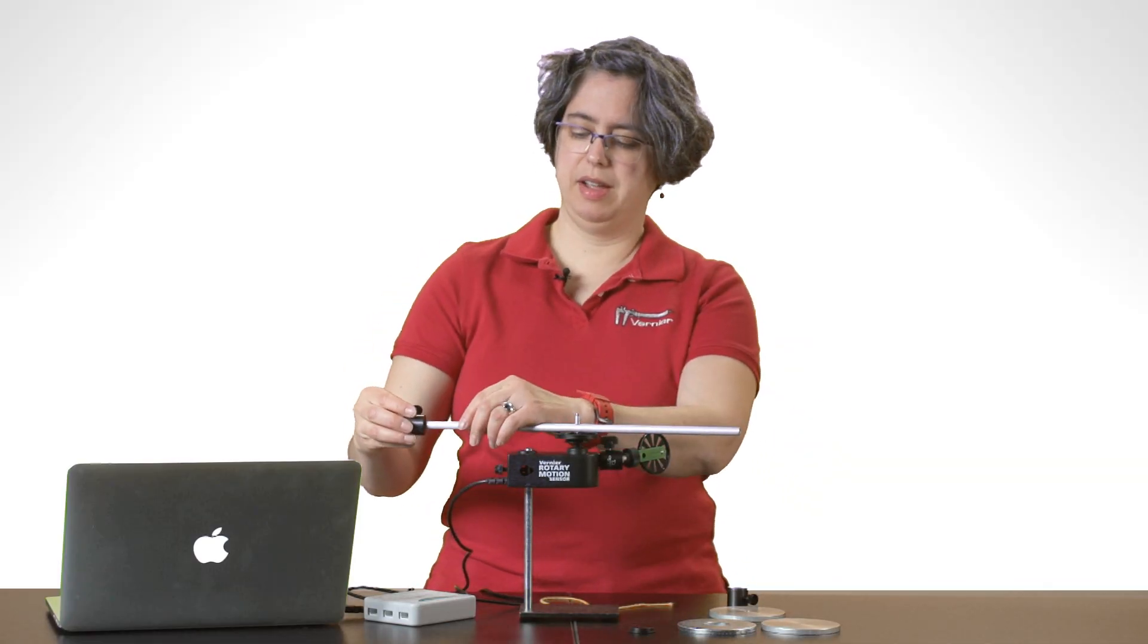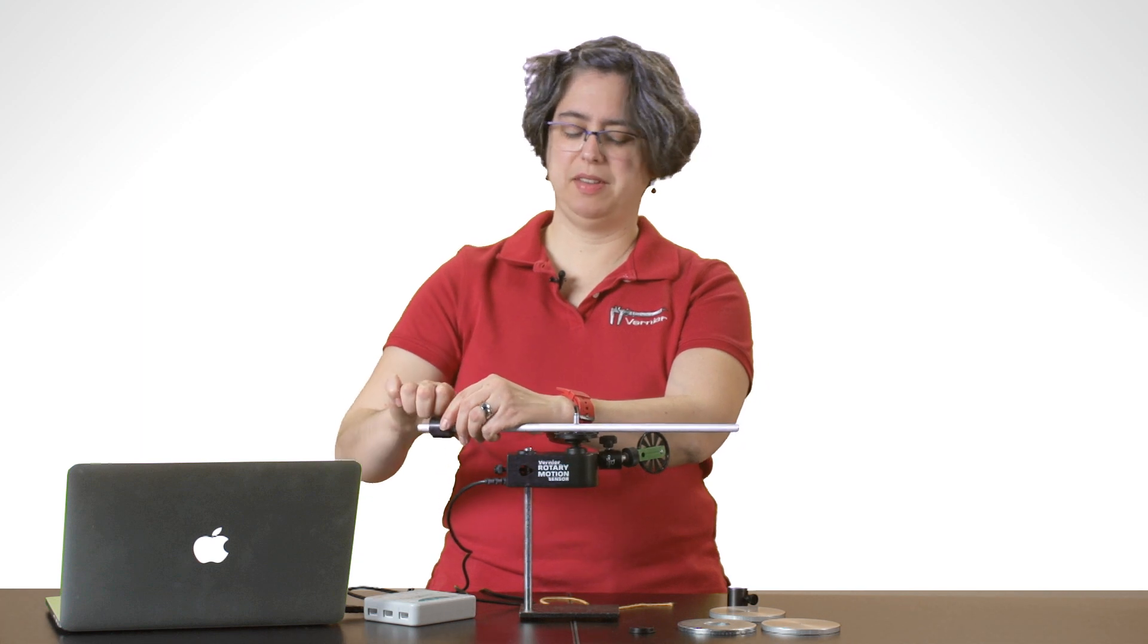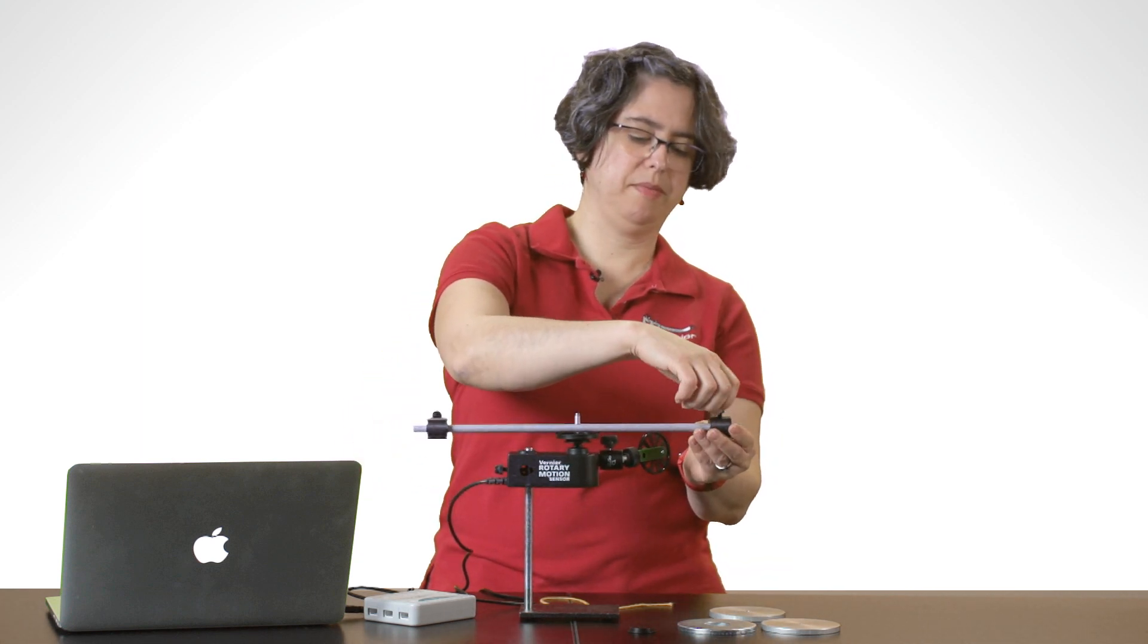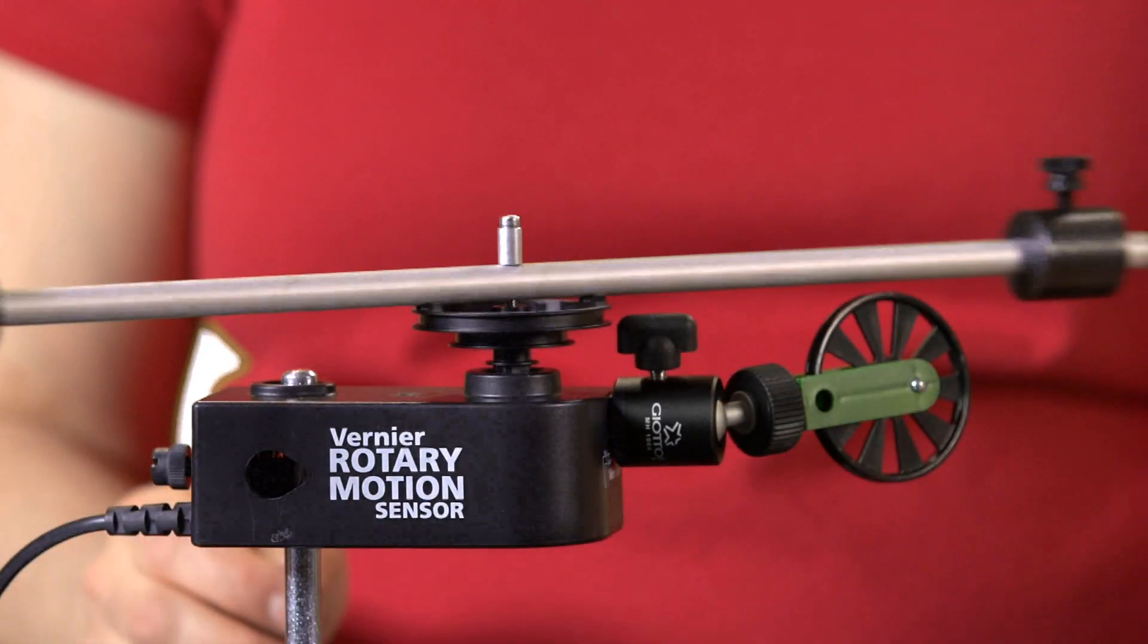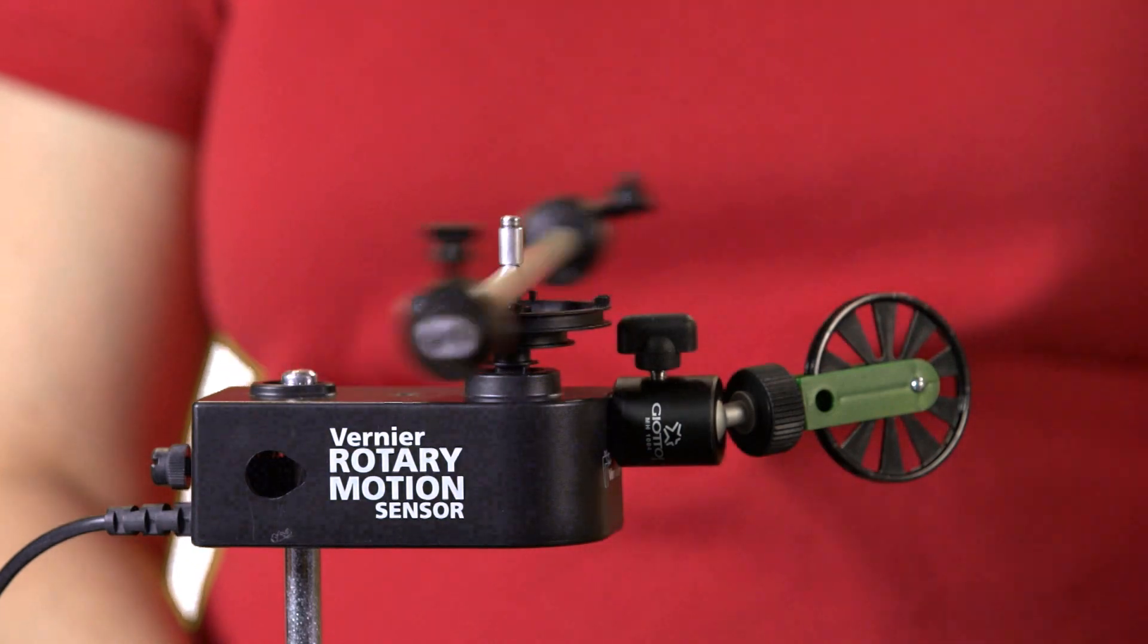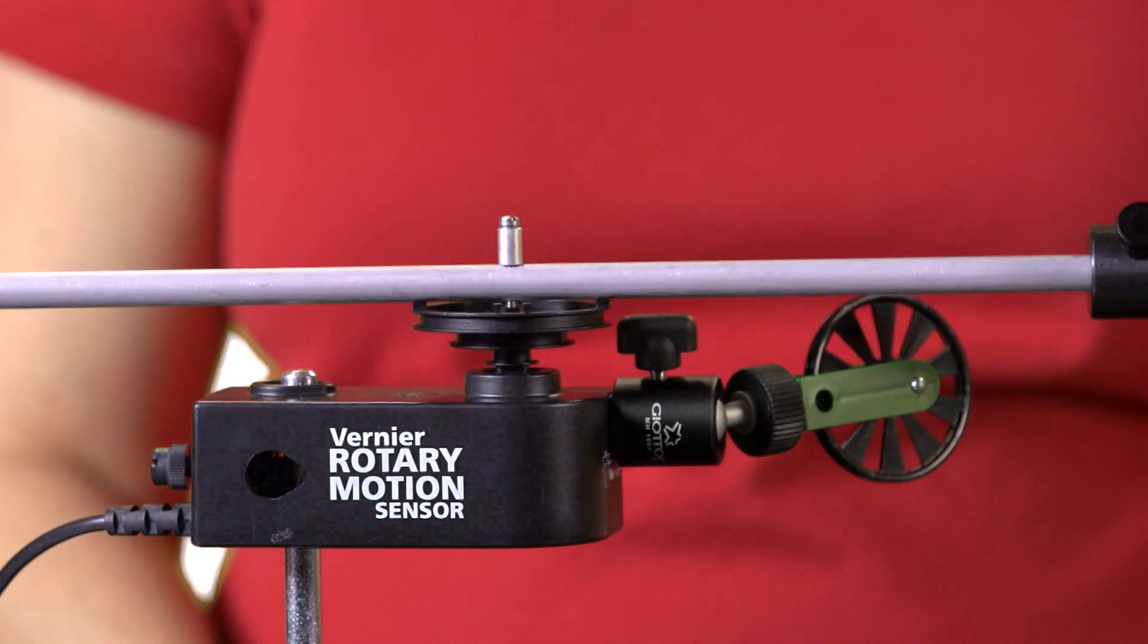And then I can place my point masses on the rod. And now using my string going over the ultra pulley, I'm able to measure the rotational acceleration.